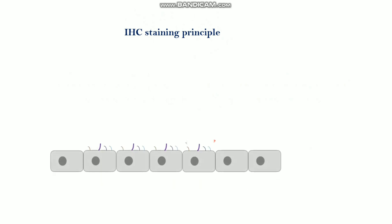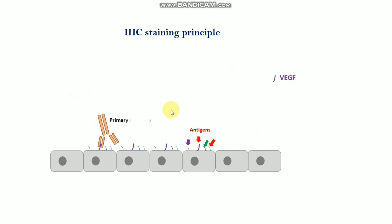Next is the IC staining principle. In tissues, there are many different kinds of antigens or proteins present — here I used different colored arrows to indicate these antigens or proteins. For example, if I want to detect VGF protein in the tissue, I need to select the primary antibody against VGF. This primary antibody specifically targets VGF.